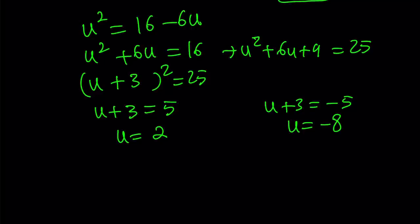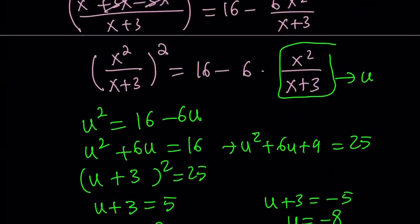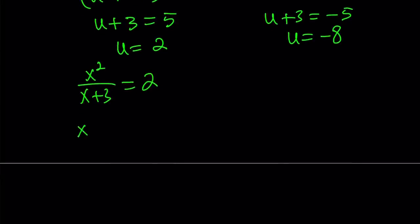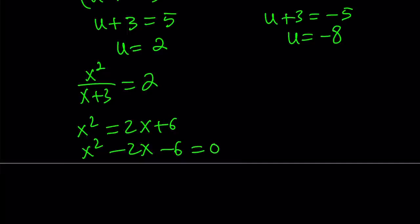After finding the u values, we must back substitute. What is u? x squared over x plus 3. Let's go ahead and back substitute that. And by just cross multiplication, we get x squared equals 2x plus 6, or x squared minus 2x minus 6 equals 0. So that's a quadratic equation. We can solve it very easily. You can add 6 and then add 1 to complete the square. But no matter what you do, you're going to get the following solutions. So from here, we get x equals plus or minus root 7.